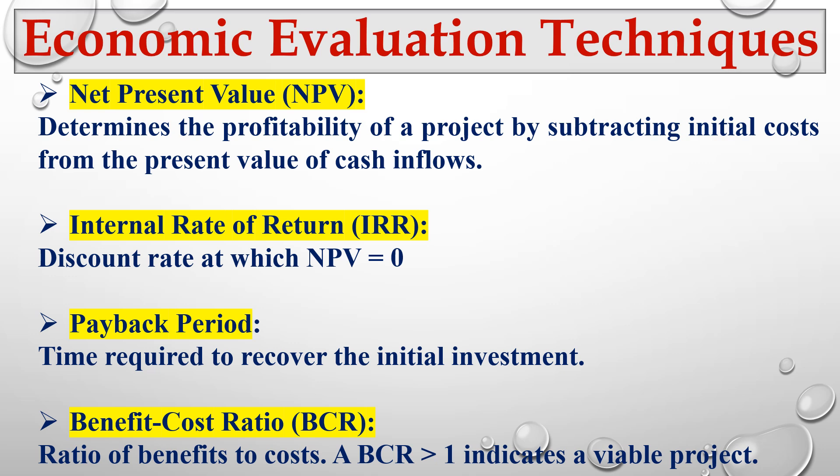Then there is the benefit-cost ratio (BCR) — the ratio of benefits to costs. If the BCR is greater than one, it indicates the project is profitable or viable. We already have videos on these indicators in our YouTube channel. We use these indicators in projects such as solar PV installations to support decision making.